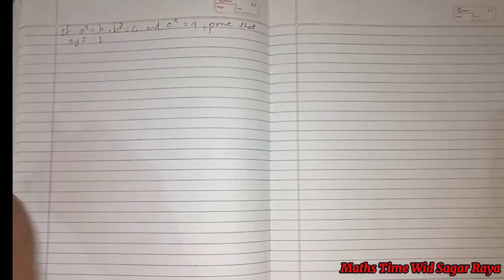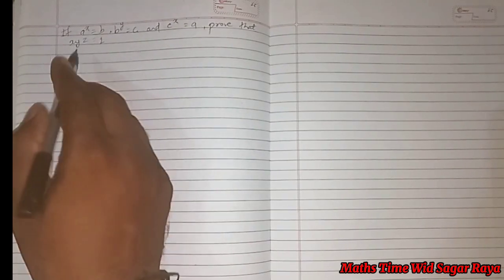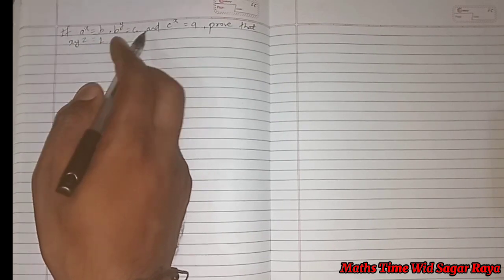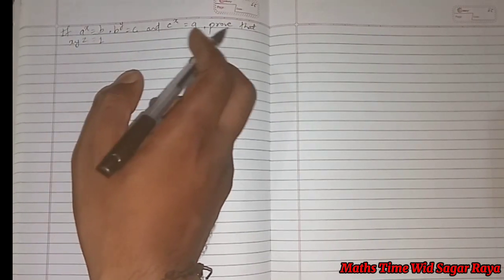Here in this question, a power x is equal to b, b power y is equal to c, and c power z is equal to a. We have to prove that xyz equal to 1.